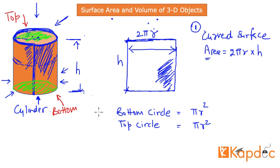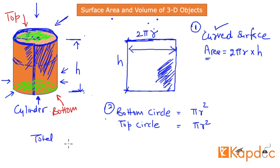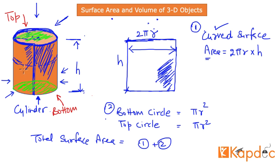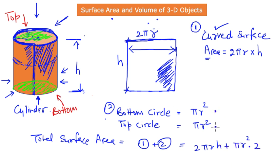So now you have two different surface areas: one is the curved surface area and the second is the top and bottom face areas. The total surface area will be equal to the sum of all surfaces present in the cylinder: 2πrh plus πr² times 2 — one for each circle.